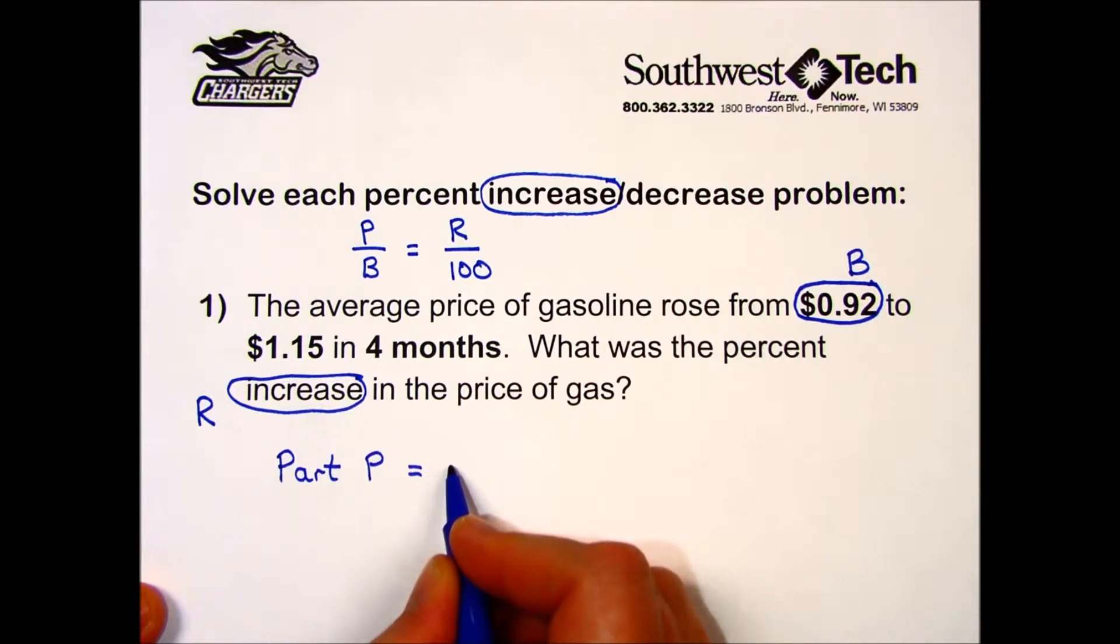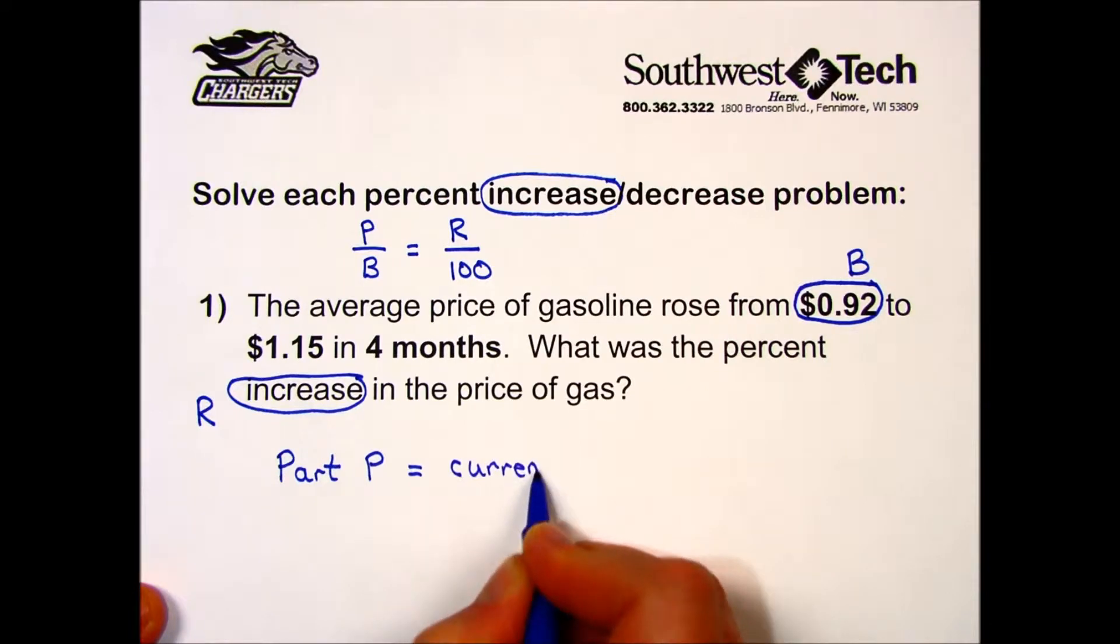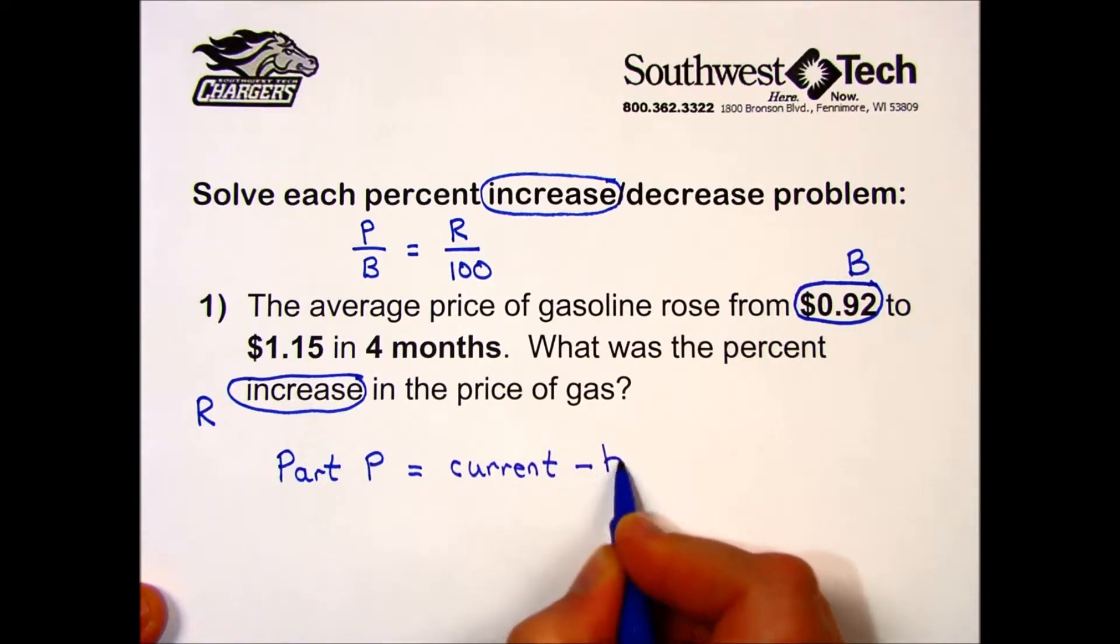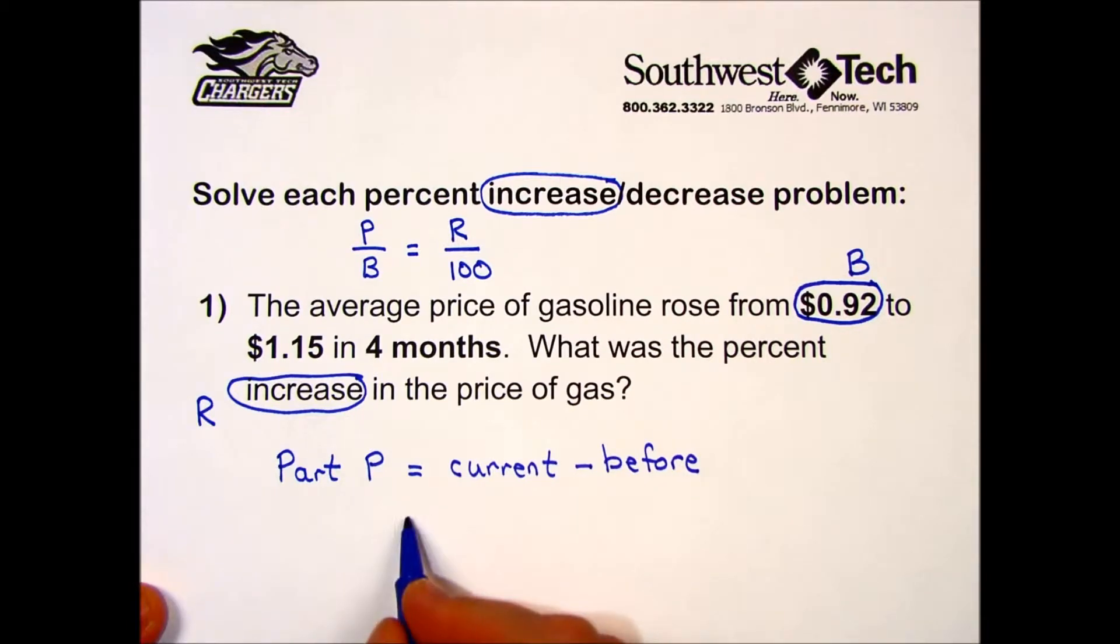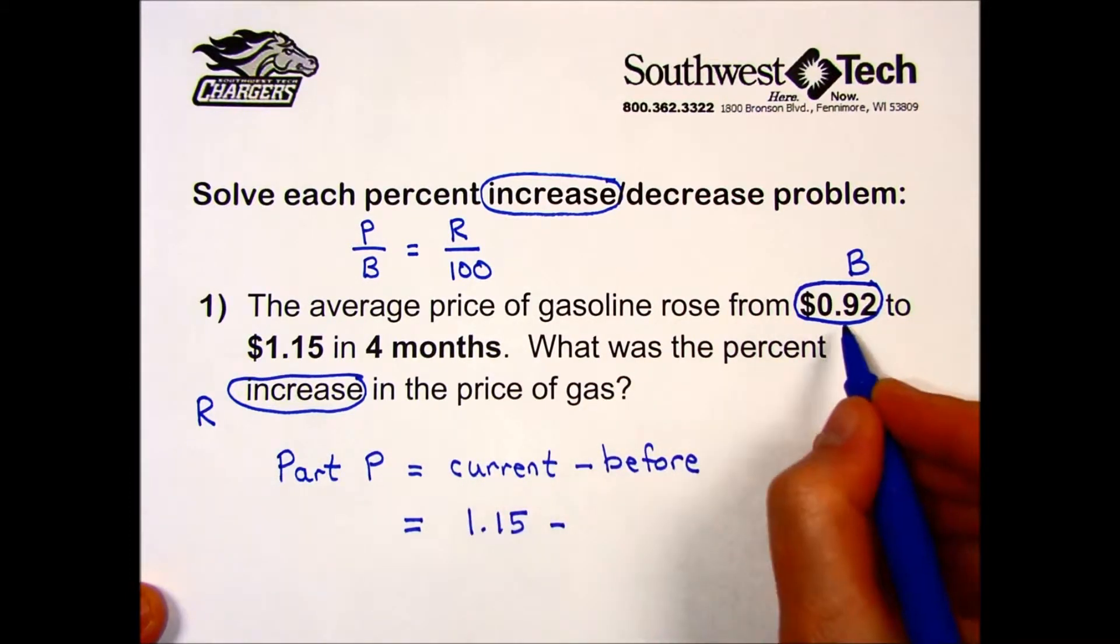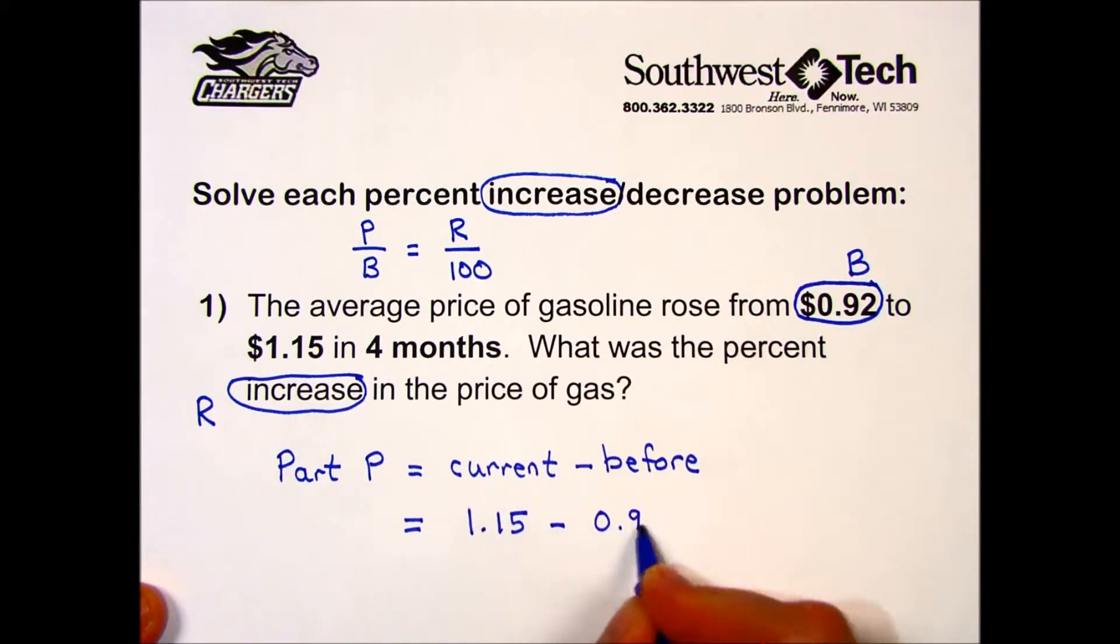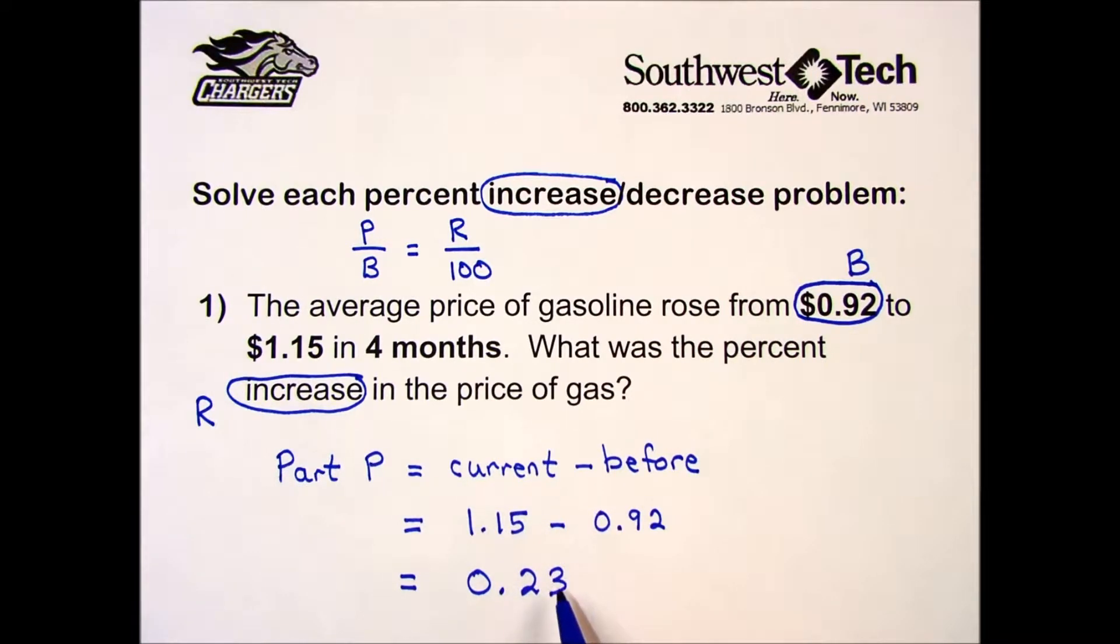First let's find our part, which will be the change, the increase, the current minus the before values. In our problem we have the current value of $1.15 and before of 92 cents, so that increase gives me a part of 0.23.